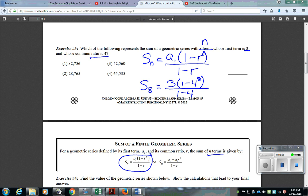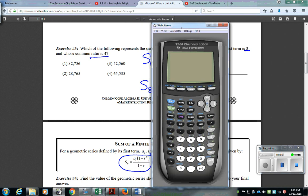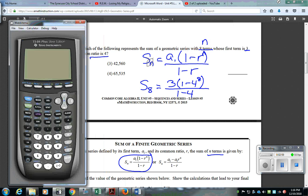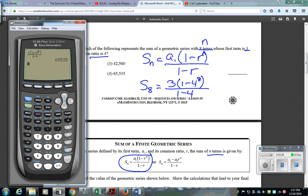So what I'm going to do is I'm going to type that into the calculator. I need a fraction, so I'm going to do alpha y equals to get a fraction. And then I have in the top, I have 3, parentheses, 1 minus 4, raised to the 8th power. Then close my parentheses. On the bottom, I have 1 minus 4. So, in this case, the sum of those first 8 terms is going to be choice number 4, which is 65,535.